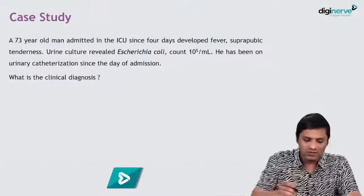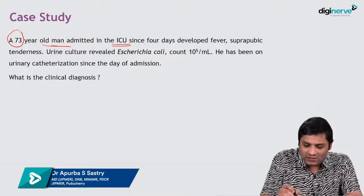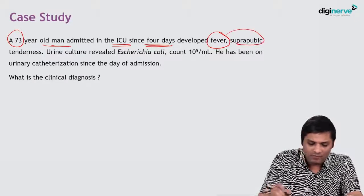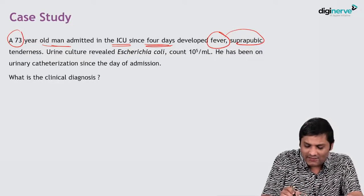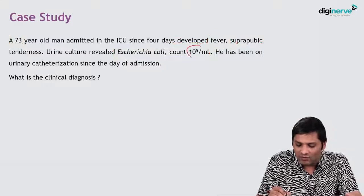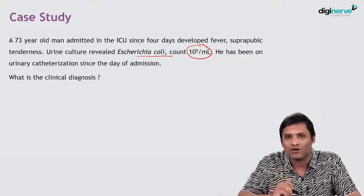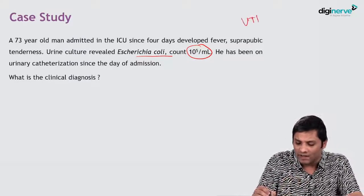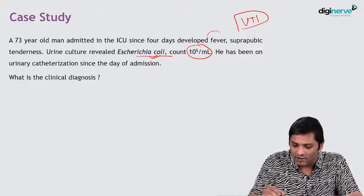Let's start with the case scenario. A 73-year-old man admitted in the ICU since 4 days developed fever and suprapubic tenderness. Urine culture has revealed S. sericea coli with a significant count of more than 10^5 per ml. So it looks like a case of UTI because you have a urine culture with significant count, plus fever and suprapubic tenderness.